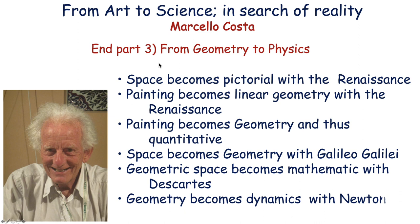So this is the end of Part 3, moving from geometry to physics. To summarize: space became pictorial in the Renaissance; painting became linear geometry with the Renaissance; painting became geometry and thus quantitative; space became geometry with Galileo Galilei; geometric space became mathematics with Descartes; and geometry became dynamics with Newton. You can see now a direct line between the paintings and the development of modern physics. I'll see you until my next part.